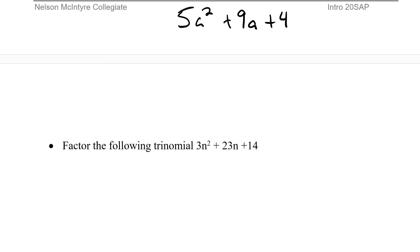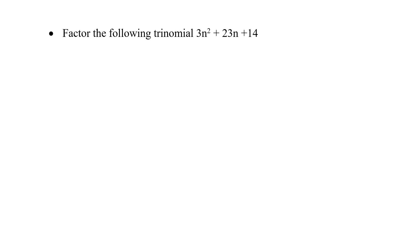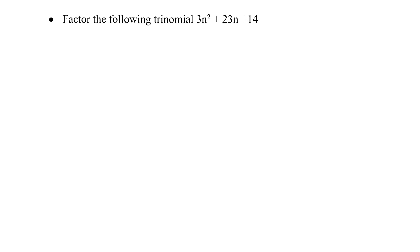Let's move on to our second example: factor 3n squared plus 23n plus 14. Regular trinomial factoring won't work because there's a 3 in front. And 3, 23, and 14 share no common factor. So we use decomposition. Start with the coefficient of the squared term times the constant: 3 times 14 gives us 42.